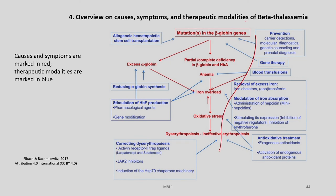In the center we have the causes and symptoms printed in red, and the various therapeutic modalities are marked in blue. There are certain mutations in the beta globin genes which may cause partial or complete deficiency of beta globin and HbA, causing anemia, iron overload, oxidative stress, and so on. Therapeutic approaches include prevention, carrier detection, molecular diagnostics, genetic counseling and prenatal diagnosis, which are very important for control of this disease in a population.